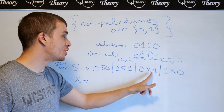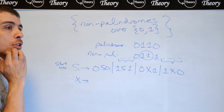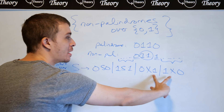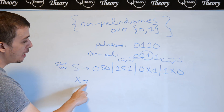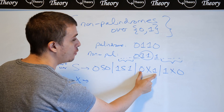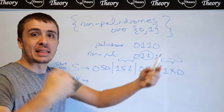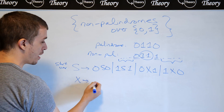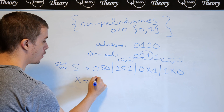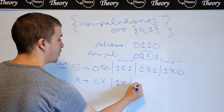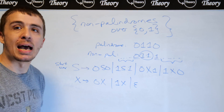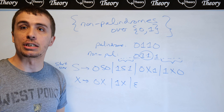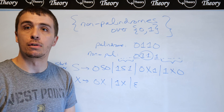S is now complete and notice there's no right-hand side for S with no variables — every production has a variable. So to make a string of terminals, we must go through one of the two rules involving X, which means we must have generated different characters at the same distance from either end, corresponding to non-palindromes. At X's point we can generate whatever: 0X, 1X, or empty. That is a context-free grammar for the set of non-palindromes over {0, 1}.